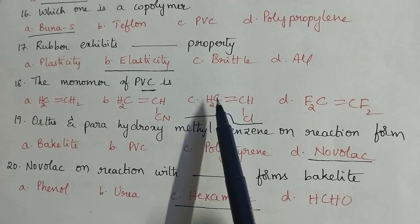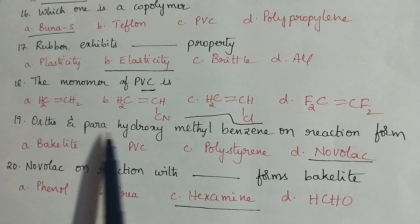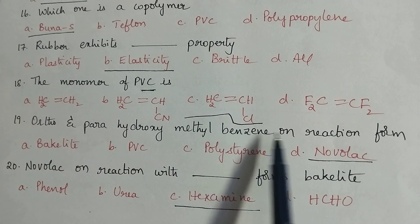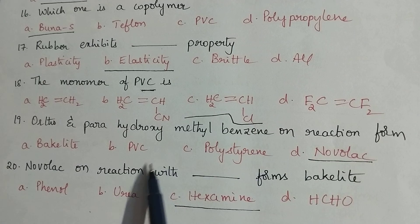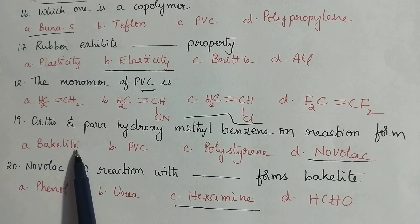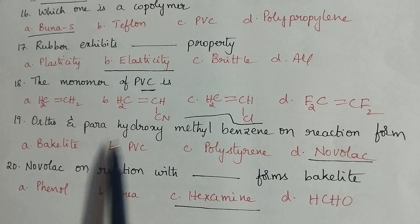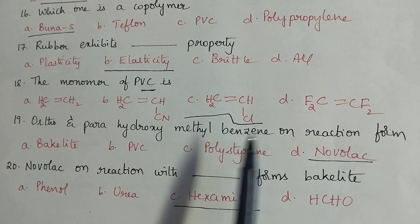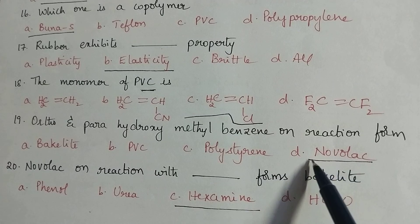Ortho and para hydroxy methyl benzene on reaction forms during the formation of bakelite. Bakelite three steps are involved. In the second step ortho and para hydroxy methyl benzene undergoes polymerization which results in the formation of novolac.